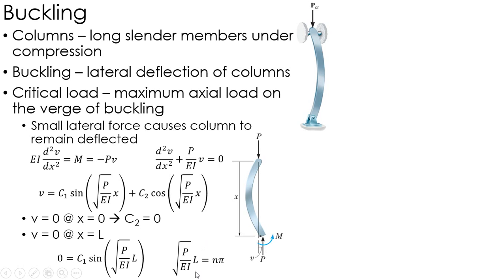To get that sine equal to 0, it follows this sort of approach because it's a cyclical function. The critical load would be where n equals 1. Plugging in n equals 1 and solving for P, I find that critical load equal to this equation right here. This is the load on the verge of buckling for a column.